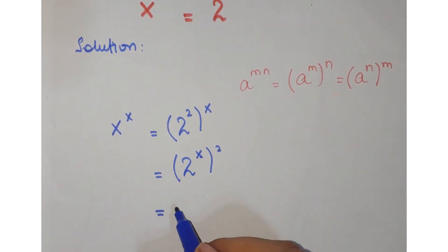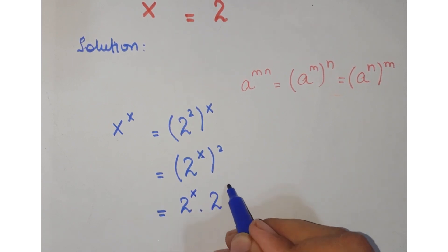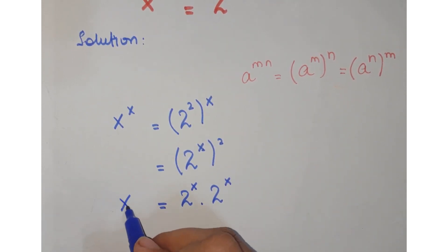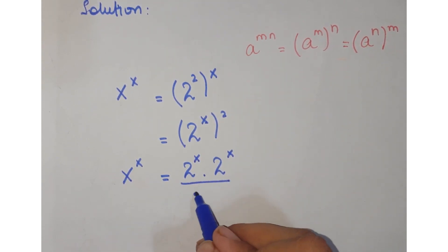Now there are two terms of x, so you can write two terms of 2 to the power x. You can write it 2 to the power x times 2 to the power x, and here you have x to the power x. Now divide by 2 to the power x on both sides.